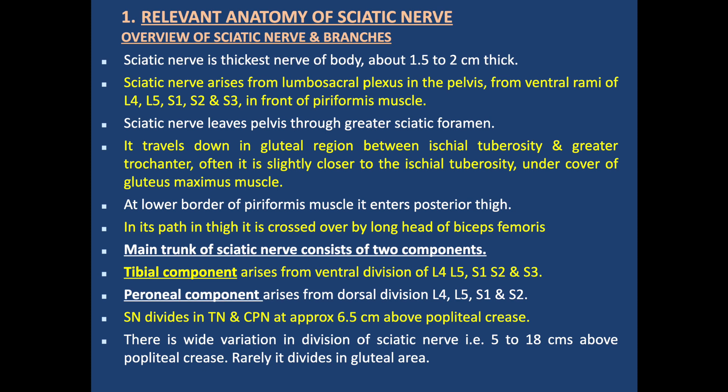Relevant anatomy: The sciatic nerve is the thickest nerve of the body, about 1.5 to 2 cm thick. The sciatic nerve arises from the lumbosacral plexus in the pelvis, from ventral rami of L4, L5, S1, S2, and S3, in front of the piriformis muscle. The sciatic nerve leaves the pelvis through the greater sciatic foramen.